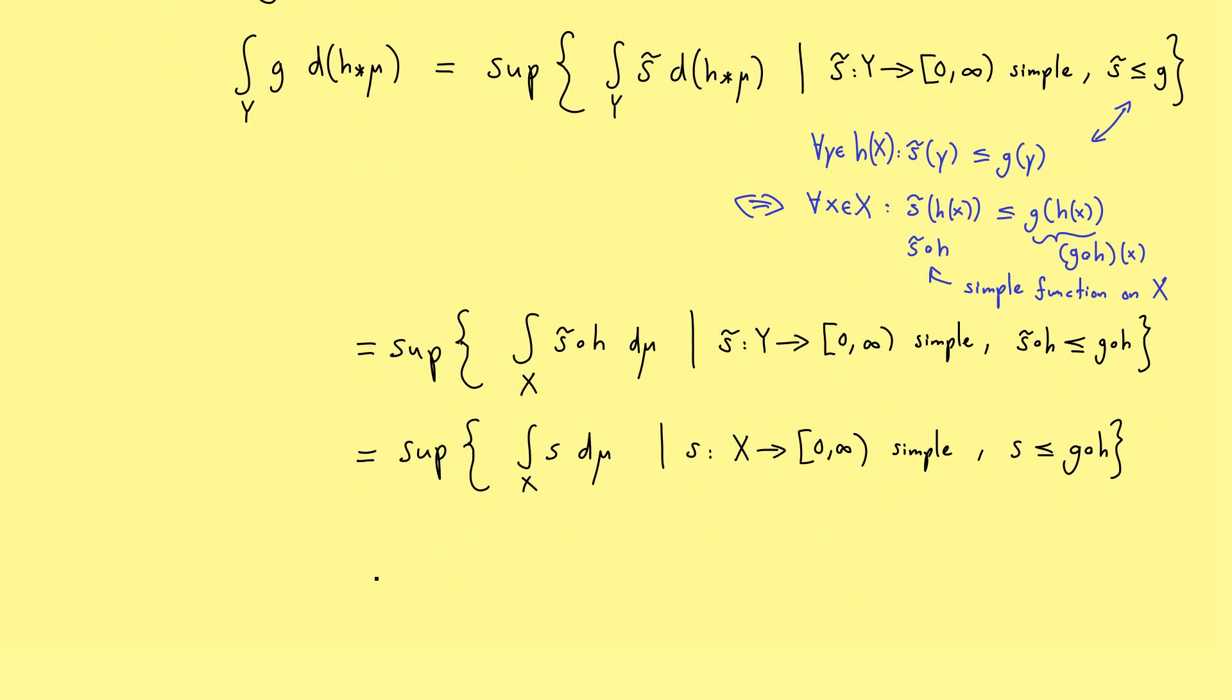Using this, we are indeed finished here, because what you see here is just the definition of the integral of the function g composition with h. And now you see our substitution rule is also fulfilled for such measurable functions, because the left-hand side here is equal to the right-hand side here.